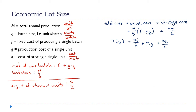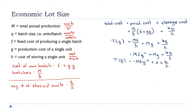I'll rewrite T(q) as mf·q^(-1) + mg + kq/2. Now we can find the derivative: T'(q) = -mf·q^(-2) + 0 + k/2. The derivative of the constant mg is zero, and the derivative of kq/2 is just k/2.